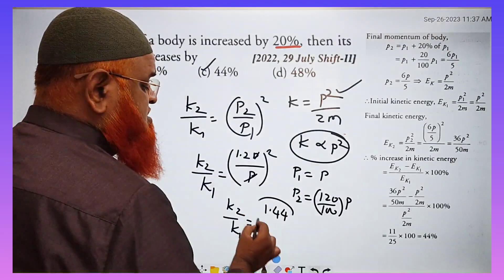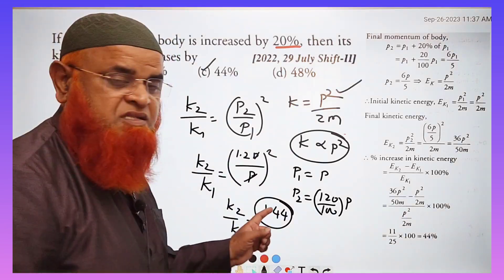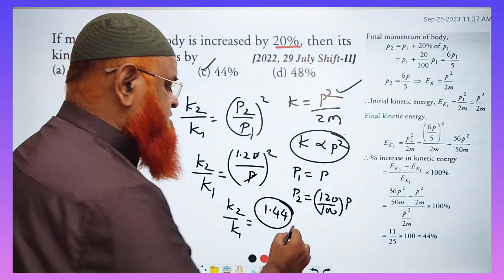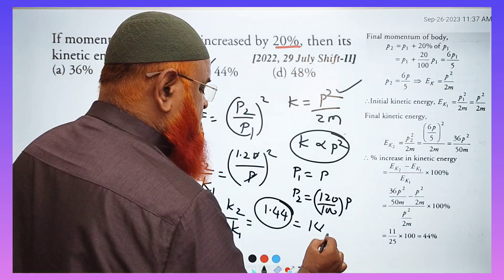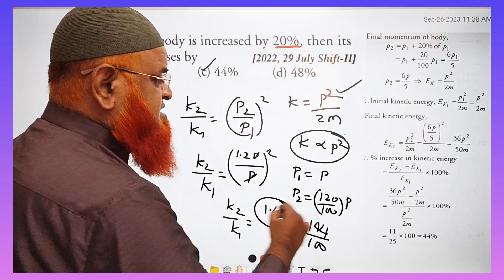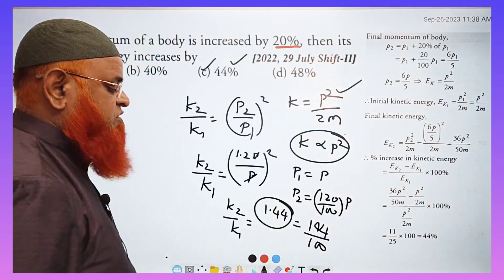So K2. So how much is it? 144. This is nothing but 1.44, which means 144%. This can also be written as 144 by 100. So how much is extra here? 44% is extra out of 100.